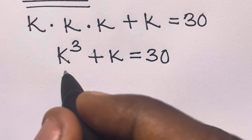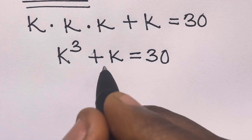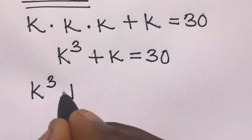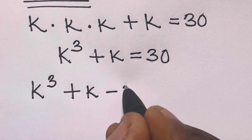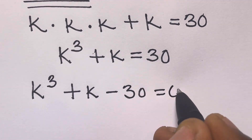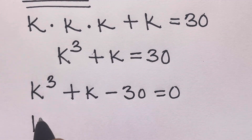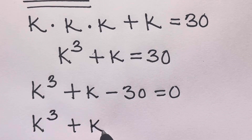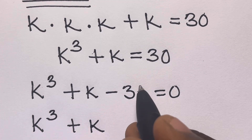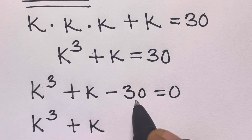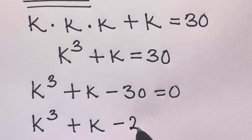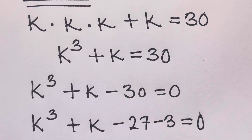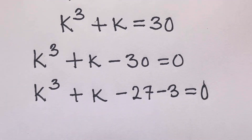From here we transfer 30 to this side, so we have k cubed plus k minus 30 equals zero. We can further break 30 into 27 plus 3, so we rewrite: k cubed plus k minus 27 minus 3 equals zero.